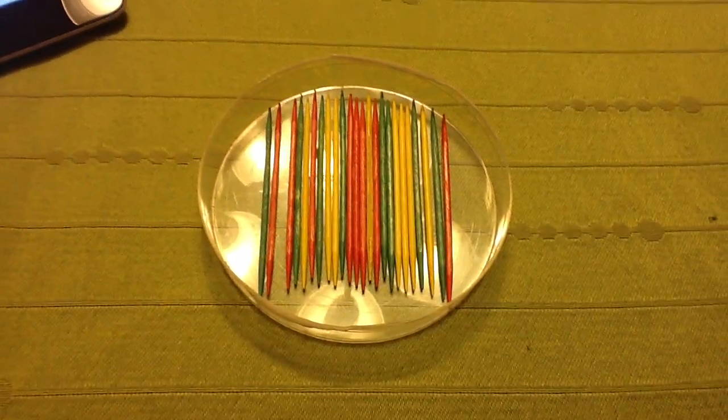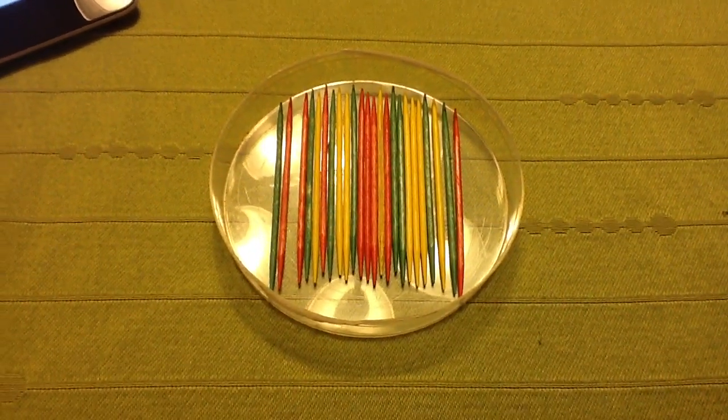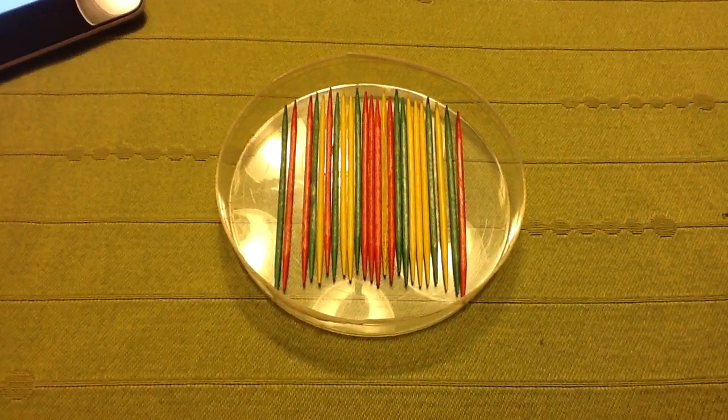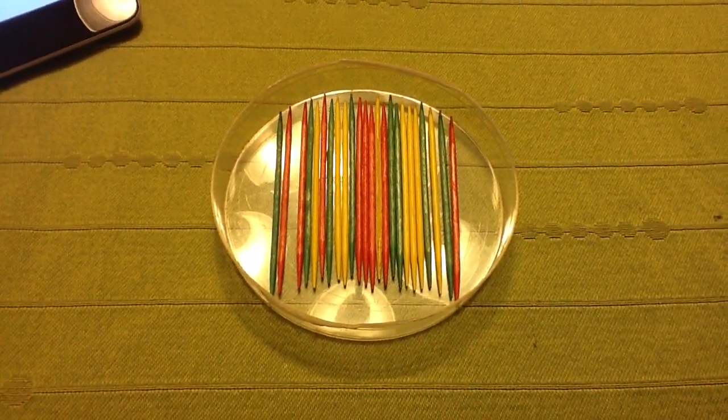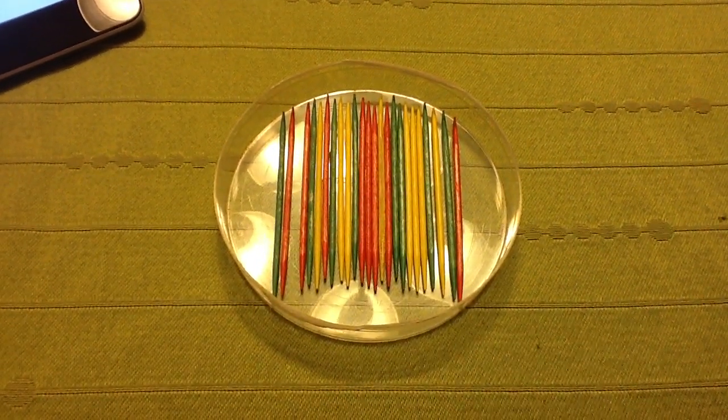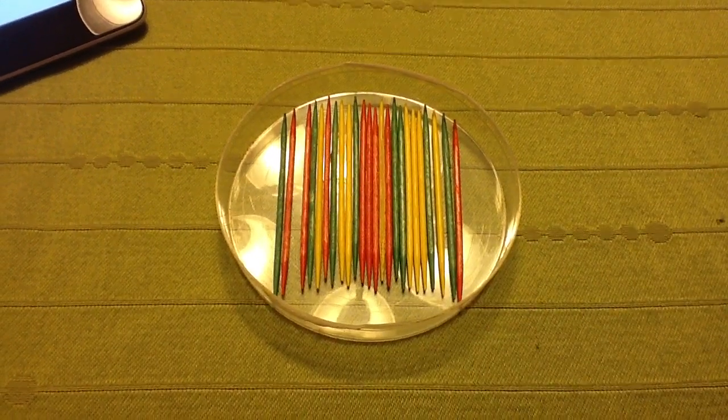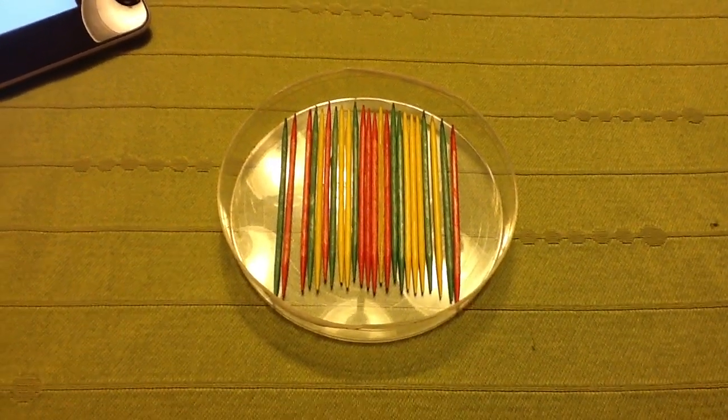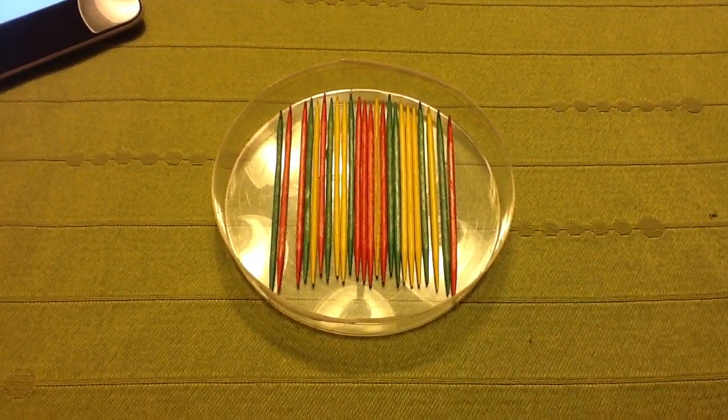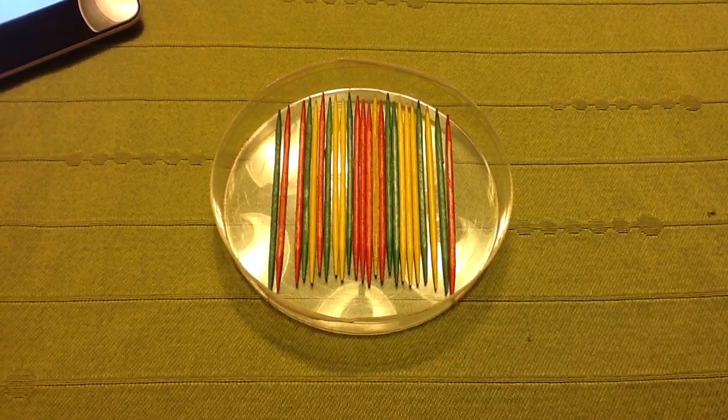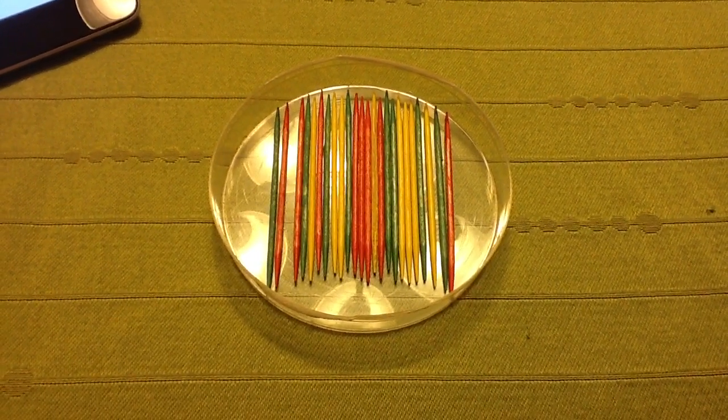This is the toothpick lab activity. In our petri dish, which is our gene pool, we have a bunch of toothpick fish. These are not the actual fish, but the genes of the fish. As you can see on your sheet, the different colors mean different things. The greens are dominant over the reds and the yellows.